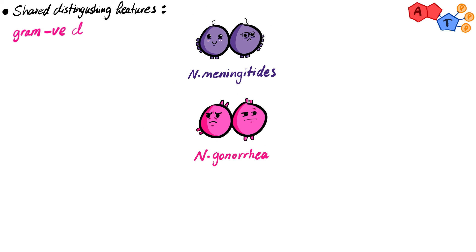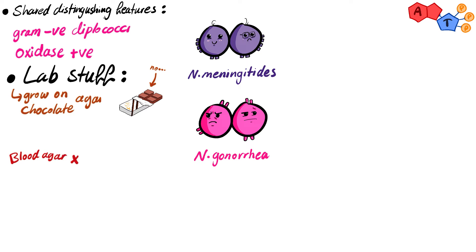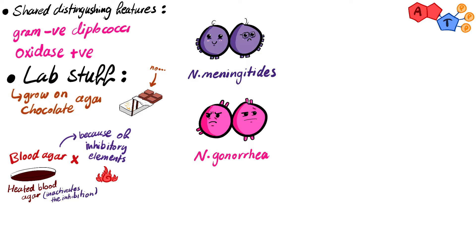First of all, they're both gram-negative diplococci, and second of all, they are both oxidase positive. For lab purposes, Neisseria species grow on chocolate agar. Neisseria cannot grow on regular blood agar because it is inhibited by some elements in it. However, when we heat the blood agar, these inhibitory elements become inactive and thus Neisseria can grow. This heated blood agar is in fact the famous chocolate agar.